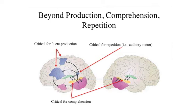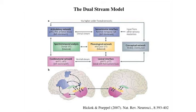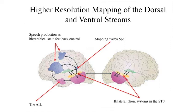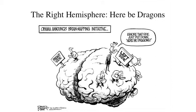To summarize the plan: regions in the frontal lobe are critical for fluent production. A specific region — area SPT — is critical for repetition, putting together the sensory and motor parts and doing the transform between those representations. Regions in the ventral temporal areas are important for comprehension. I'll next talk about superior temporal sulcus regions, which appear important for perceiving and recognizing phonemes in the context of word comprehension.